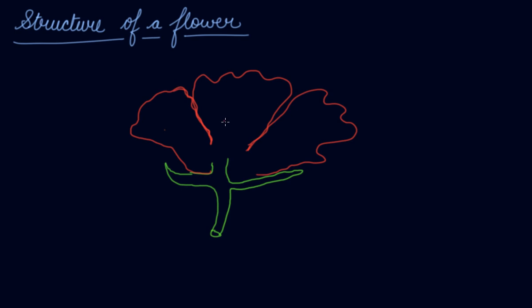Now these are some of the flower petals. I'm drawing it bigger — you might not understand now but I will let you know in a couple of seconds after making it. Right, so now I have drawn the structure of the flower. Now let's label this.